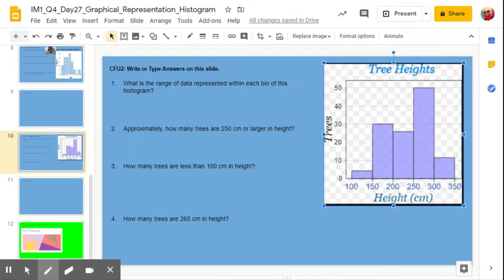All right. On this histogram, we have tree heights. And so the frequency is the number of trees and the horizontal axis is our height in centimeters. So our first question is,